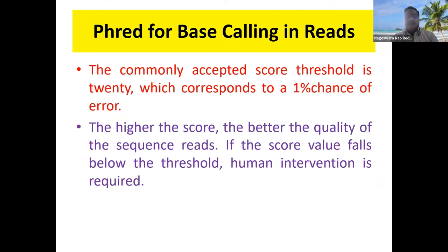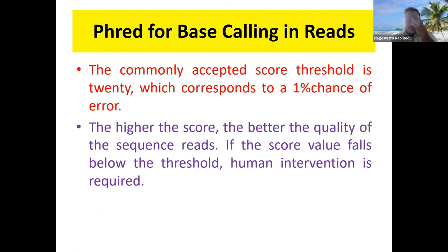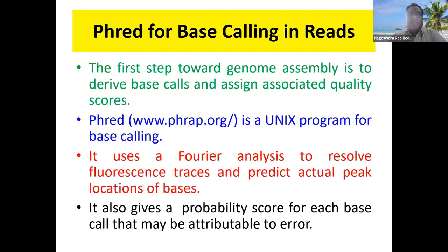We look at a 1% chance of error, which is accepted. A higher score means higher quality reads. If the score value falls below the threshold, human intervention is required — we manually look at the curve and assign the base. This is base calling using PHRED.